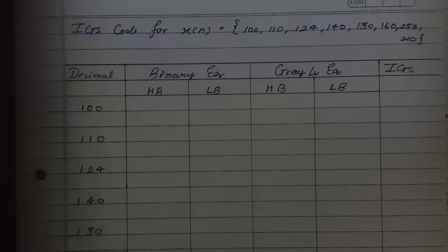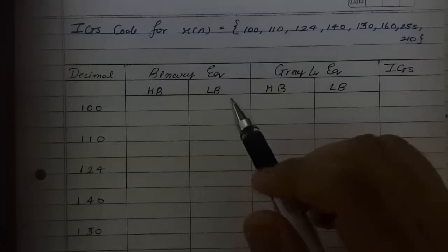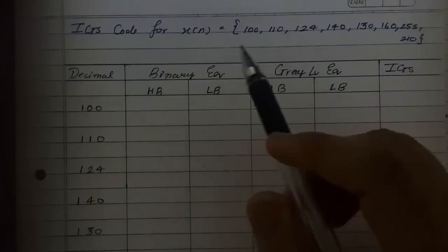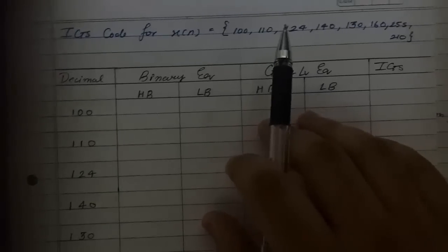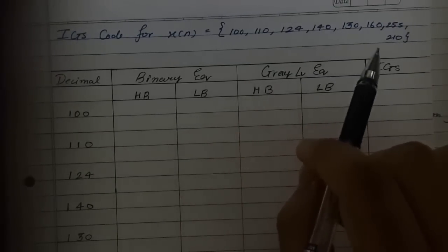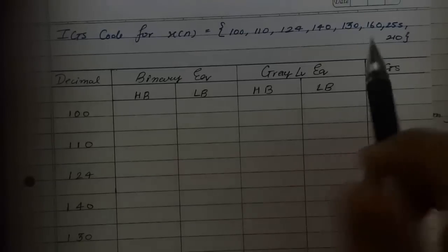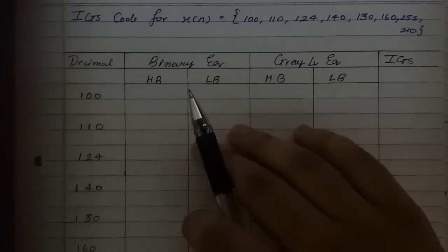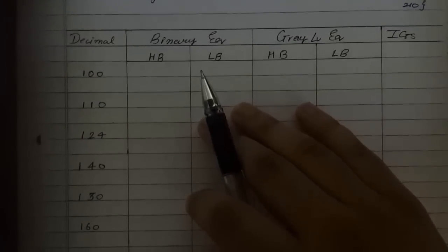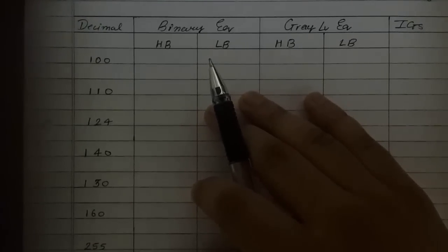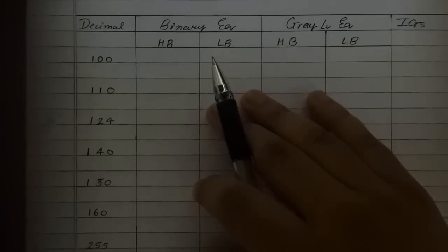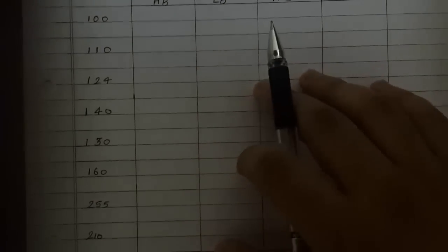Let us understand the IGS coding technique with the following example. We have a set of data elements x(n): 100, 110, 124, 140, 130, 160, 255, and 210. These decimal data units are listed in the first column of the table, which coincides with each step described earlier.